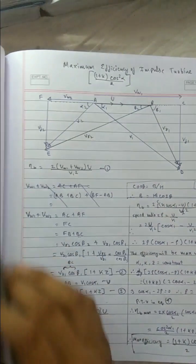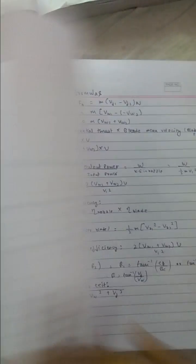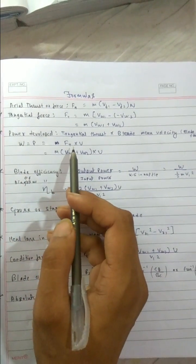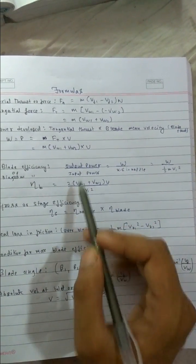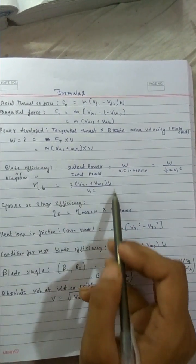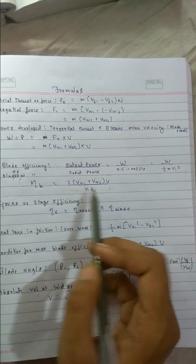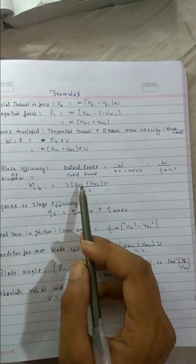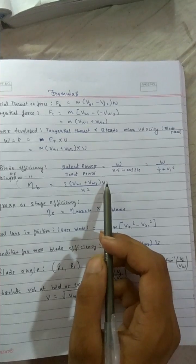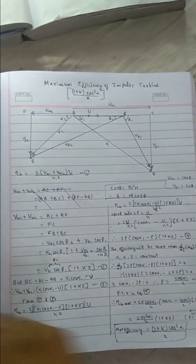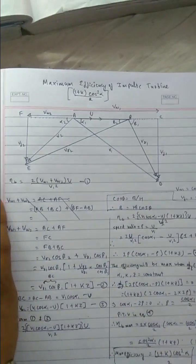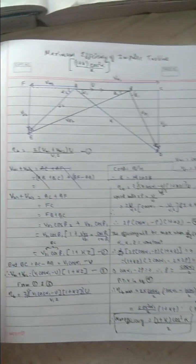Efficiency is output by input, so output power is tangential force into the mean blade velocity from where we got our efficiency formula. Now as you can see, efficiency depends on two things: VW1, VW2 and U as well as V1, so three things. Varying these three things we can get the condition for the maximum efficiency.